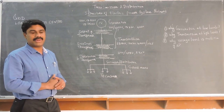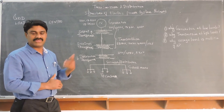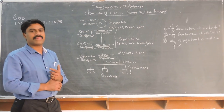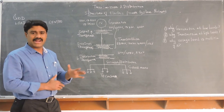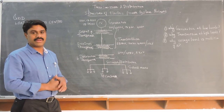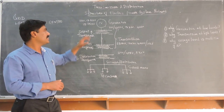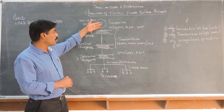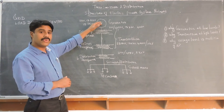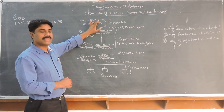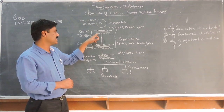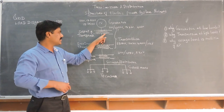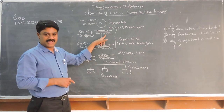Generation may be thermal based — coal-based or fuel-based — or atomic power-based, or hydro water-based generations. These generated voltages at low level, before transmitting, are stepped up by using a step-up transformer in the generation station itself. This substation is called the generating substation.